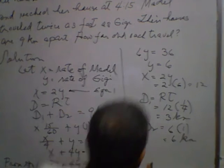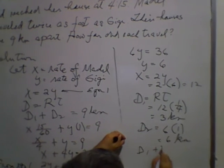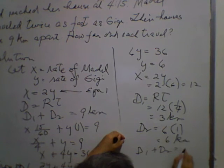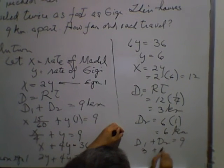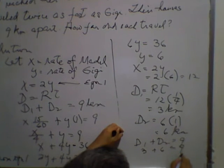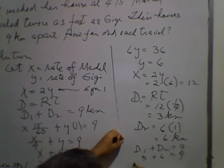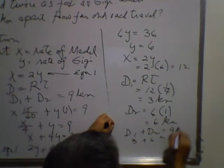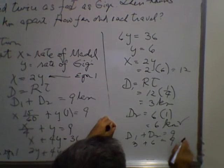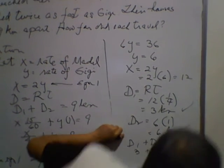We check: D1 plus D2 should equal 9. So 3 plus 6 equals 9 — correct. The distance traveled is 9 total: Gigi traveled 6 kilometers and Madel traveled 3 kilometers. That's it for problem number 1.